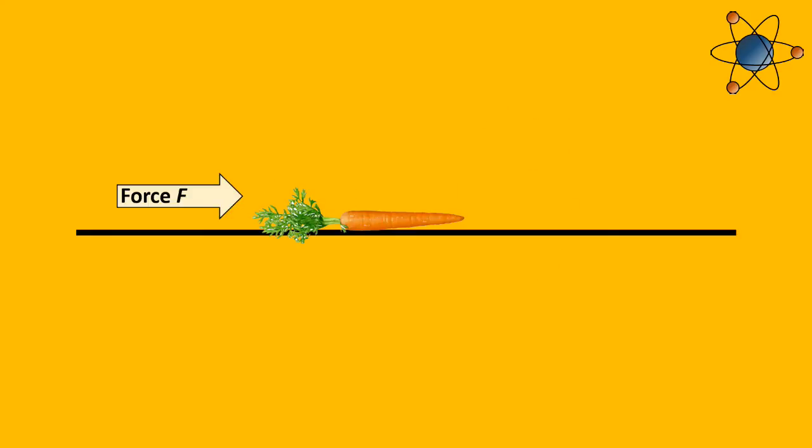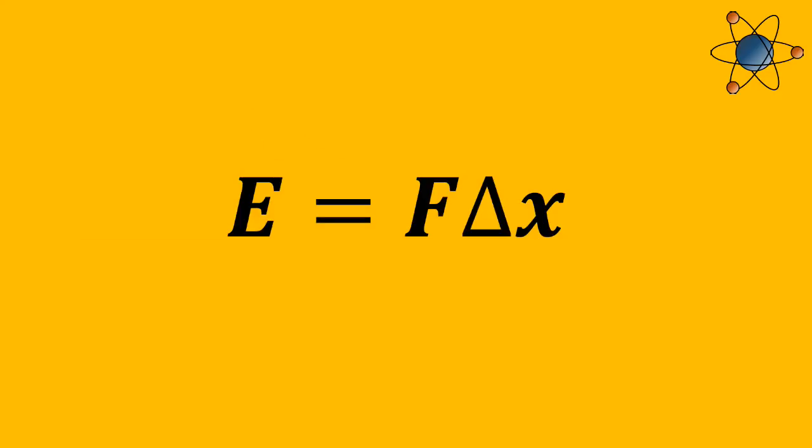Now, whilst I'm pushing the carrot with the constant force f, I'm using energy. And the energy I use is equal to the force I apply times the distance I move whilst applying that force. So here it's force times delta x.